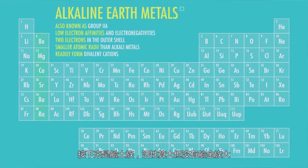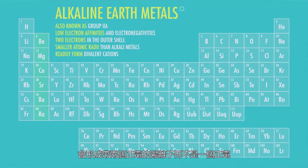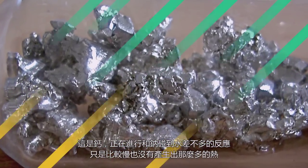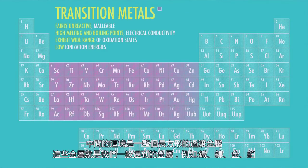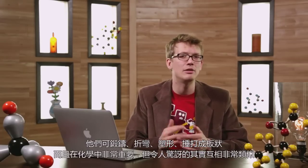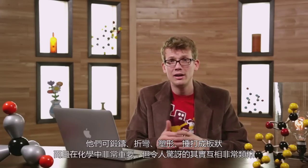Next, you have the alkaline earth metals — reactive metals, but not as reactive as the alkali metals, forming cations with two positive charges instead of just one. Calcium, shown here, undergoes a very similar reaction to sodium and water, just a little more slowly, producing a little less heat. The middle body area of the table is made up of a nice solid rectangle of transition metals. These are the metals you think of as metals, with iron and nickel and gold and platinum. The majority of elements are metals. They're fairly unreactive, great conductors of heat, but more importantly for us, good conductors of electricity. They're malleable and can be bent and formed and hammered into sheets, and they're extremely important in chemistry, but overall surprisingly similar to each other.